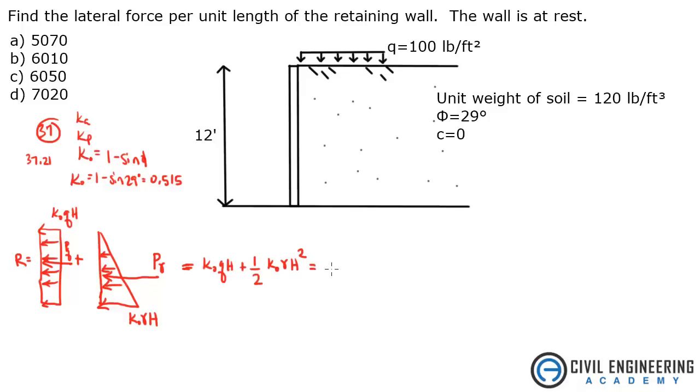Let's plug in all of our values. K0 is 0.515 times Q, which was 100 pounds per square foot, times height, which was 12 feet, plus 0.5 times 0.515, which is K0, times gamma, which was 120 pounds per cubic foot, times H, which is 12 feet squared, not cubed.